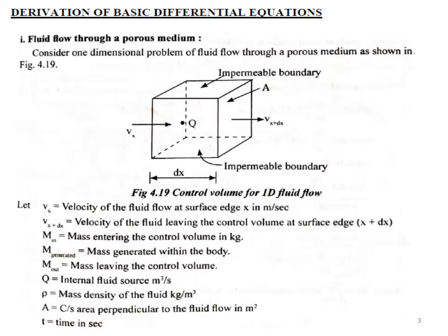Here we will be deriving the equation for fluid flow through a porous medium. We consider a one-dimensional problem of fluid flow through a porous medium as shown in the figure. This is the control volume for 1D fluid flow, where Vx is the velocity of the fluid at surface edge x in meters per second.